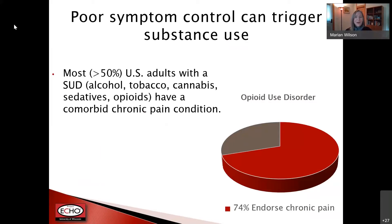When we look at people who have a substance use disorder — whether it's alcohol, tobacco, cannabis, sedatives, or opioids — more than half of them have a comorbid chronic pain condition. Within the opioid use disorder population, anywhere from 60% to 80%, depending on the study, endorse a chronic pain condition. So in addition to the pain of withdrawal that may occur upon entering treatment, they often also have chronic pain and may have limited access to pain management treatment.